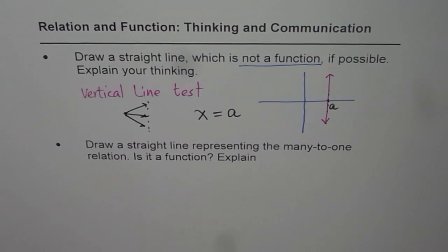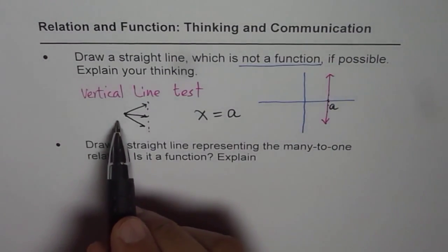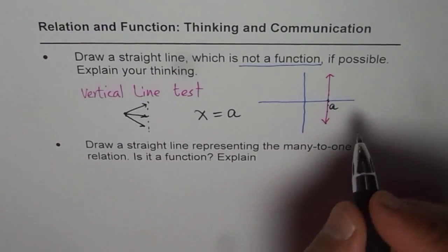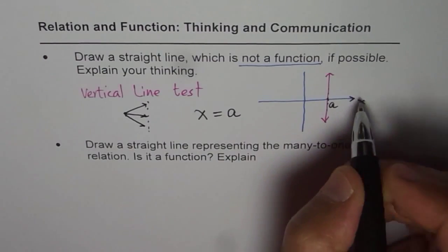Now let's look into the next one, which is draw a straight line representing many-to-one. So that one was one-to-many, right? One value along the x-axis is associated with all the y values.